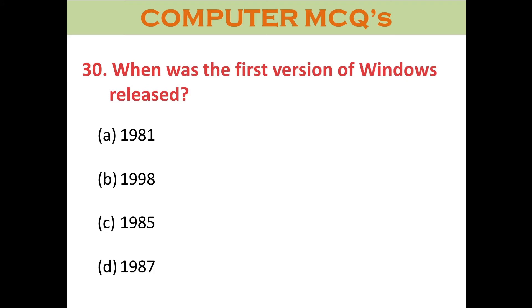Question thirty: When was the first version of Windows released? A. 1981. B. 1998. C. 1985. D. 1987. The right answer is C: 1985.